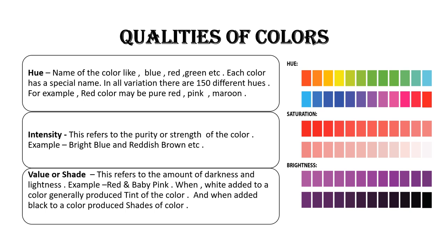The first quality is hue. Hue means the specific name given to a color — for example, blue, red, green, yellow, etc.